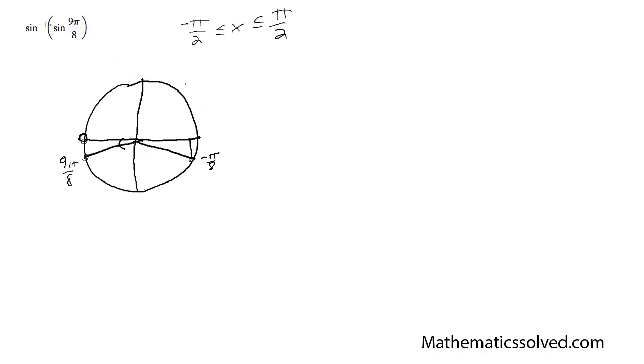So you plug in your radian values into there, and then you get the inverse of that, and it would simply spit back out negative π over 8. So your solution in this case is equal to negative π over 8.